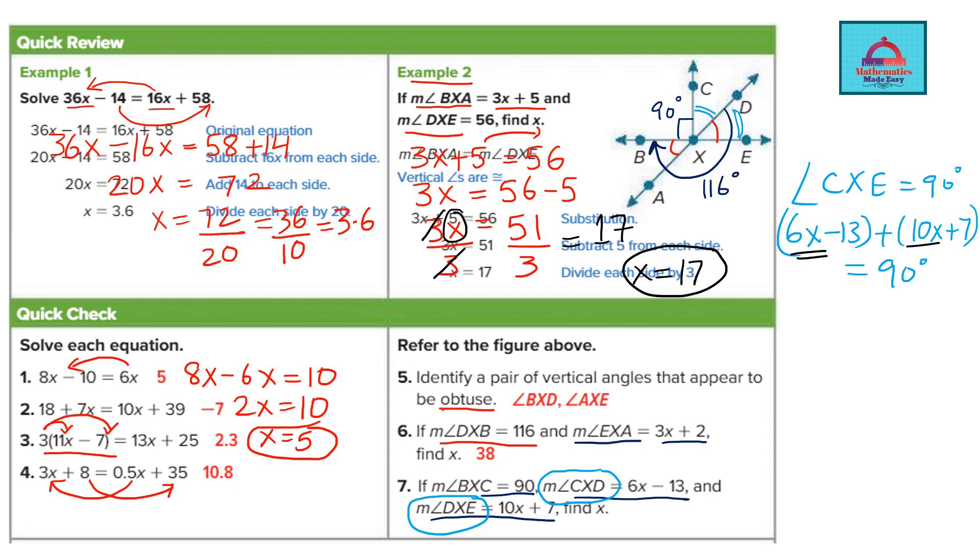So 6x plus 10x like terms combined and added gives you 16x minus 13 and 7 combined. So you subtract them and put a negative sign.